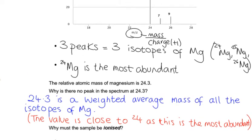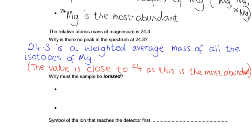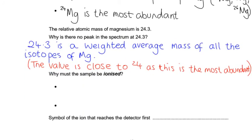There were 84 lots of 24, 7 lots of 25, and 9 lots of 26 to average. So we're actually averaging 100 isotopes of magnesium, and a lot more of them had a mass of 24, so it's close to 24.